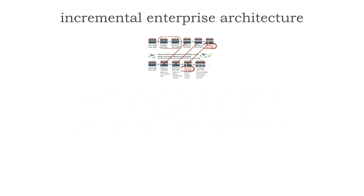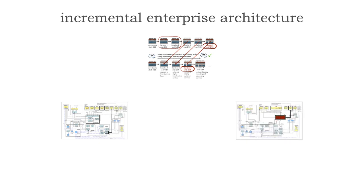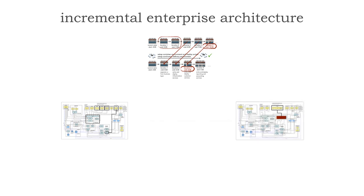Let me show you what happens with typical companies. Here's our current state, and we've got a vision of where we'd like to be — let's say the number one premier online insurance company in the nation. That's a vision, that's a goal. But what we've seen that doesn't work well is driving straight towards that goal, because we have an ever-changing landscape, the details are not enough to implement, and it usually takes too long. So with the incremental approach, we do have a vision of where we'd like to be, but instead of a death march towards that goal, we make continual improvements every step of the way, slowly reaching towards that goal.